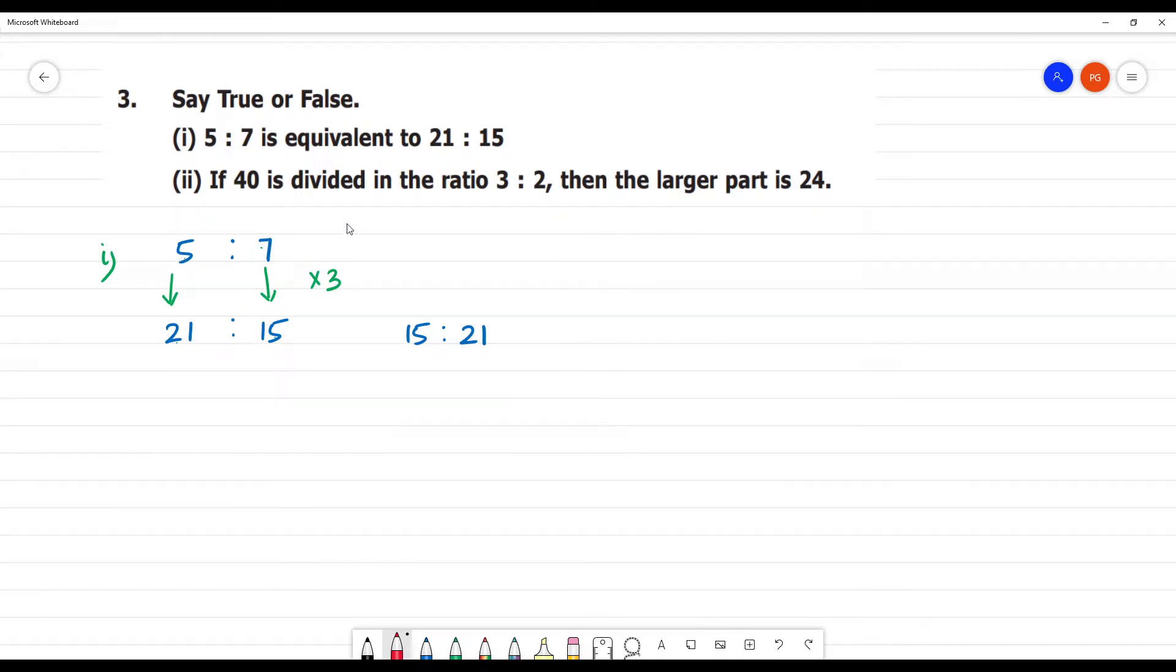5 is to 7, 5 is to 7, 15 is to 21 is correct. This is false. This is false. Clear? So that is, 5 is to 7 is 5 by 7.